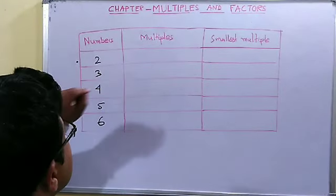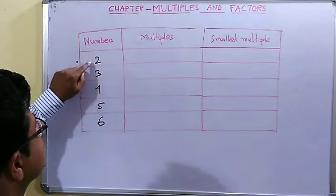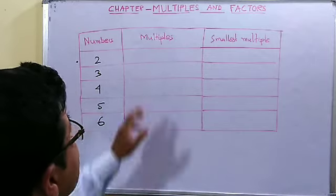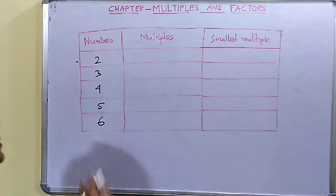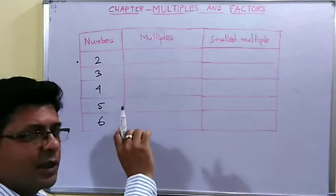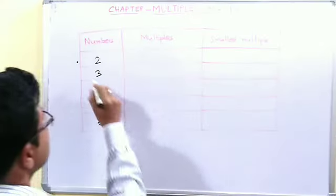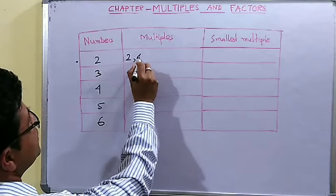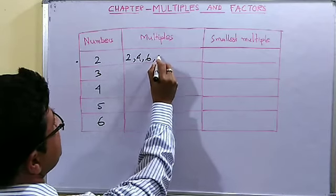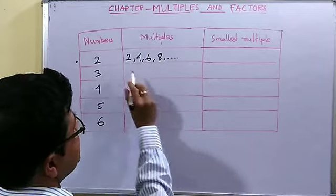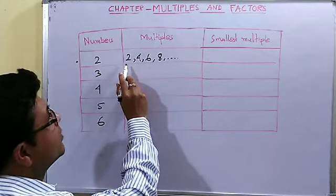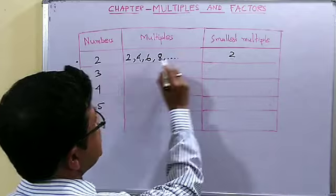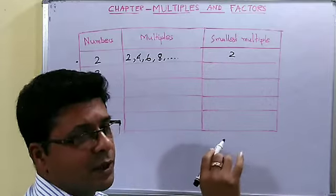Here we have taken some numbers: 2, 3, 4, 5, 6 and we shall write their multiples. The multiples of 2 are 2, 4, 6 and it will go on. Now what is the smallest multiple of 2? It is 2. What is the largest? It is endless — we cannot say.